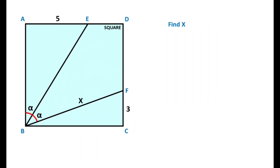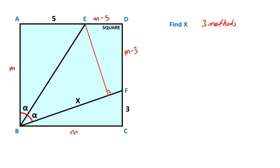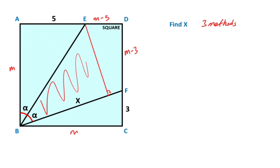Now we will calculate the value of x using the third method. This time I want to represent one side of the square with m. So here must equal m minus 5, and also here must equal m minus 3. After that, if we draw a perpendicular line like this, notice that this triangle and this triangle have the same angles, therefore these two triangles are congruent.